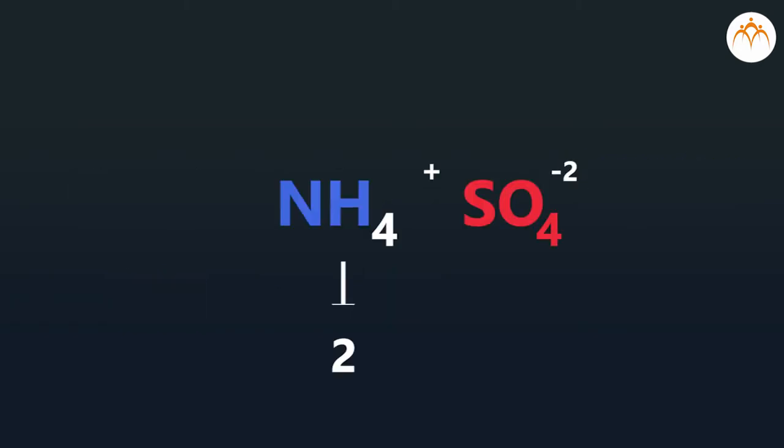If the number of compound ions is 2 or more, then the number of ions is written in brackets and the number is written at the right bottom corner as a subscript, like in (NH4)2SO4.